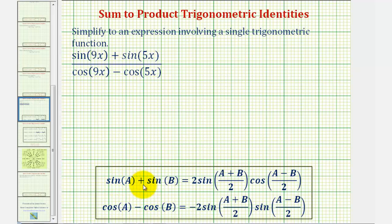where we have sine A plus sine B, and cosine A minus cosine B. So looking at the numerator first, notice A is equal to 9x, and B is equal to 5x.